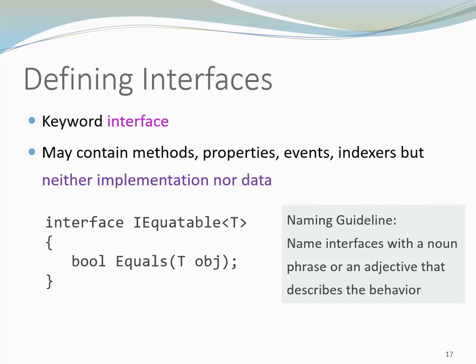There is also another naming guideline I want to point out. Interfaces should be named with a noun phrase or an adjective that describes the behavior. iList, for example, uses a noun phrase like 'list.' iEquatable uses an adjective, 'Equatable,' that describes that we are checking for equality.